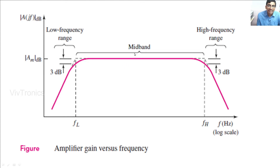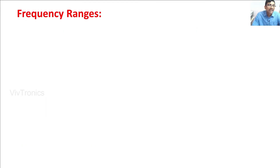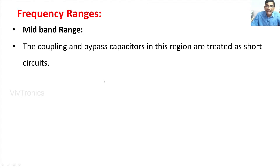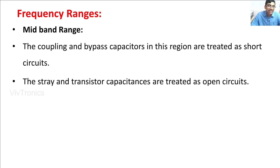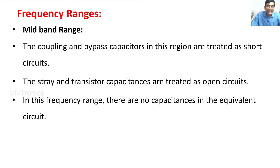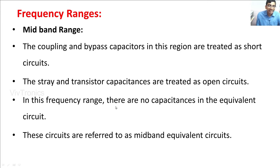When operating in the medium frequency range, the gain is constant. In lower and high frequency ranges the gain is rolling off. In the medium frequency range, all coupling and bypass capacitors can be treated as short circuits because their reactance is very small and can be neglected. The stray and transistor capacitances are treated as open circuits. Since there is no effective capacitance in the equivalent circuit, this is called the mid-band equivalent circuit.